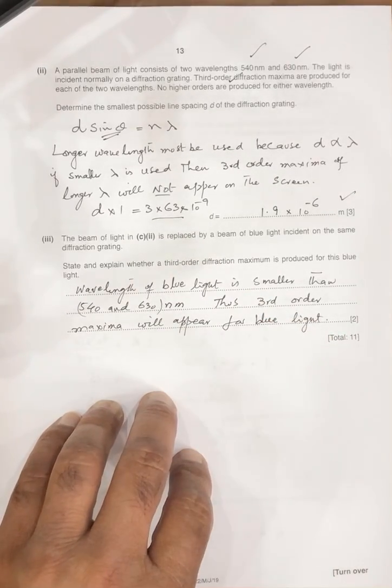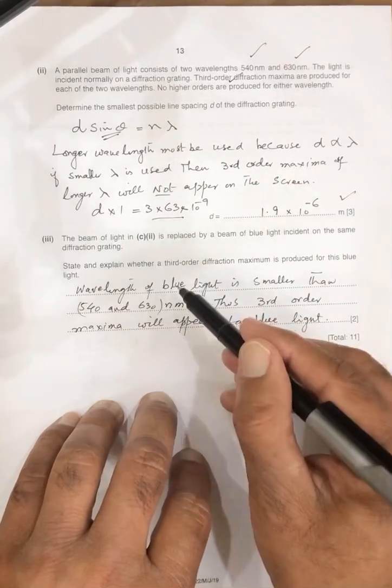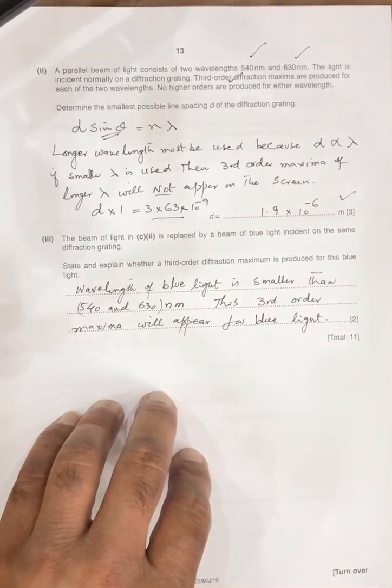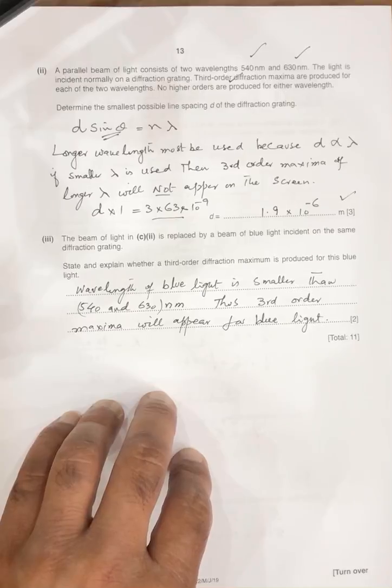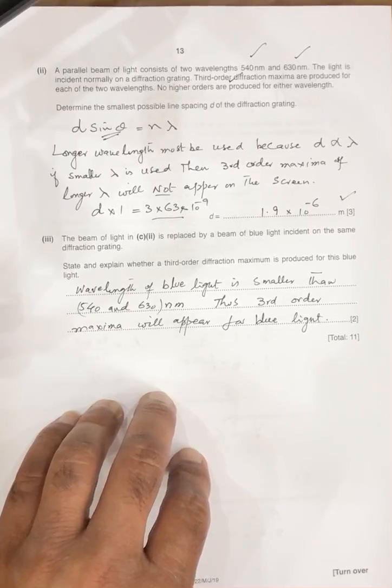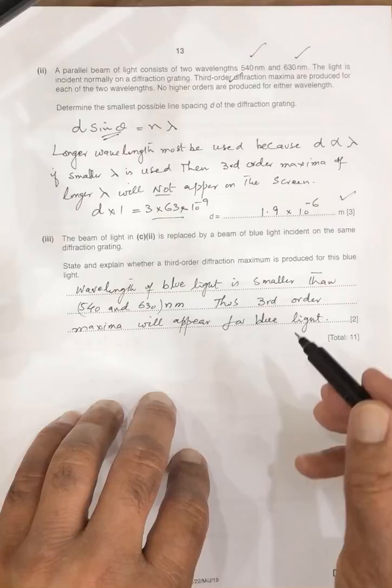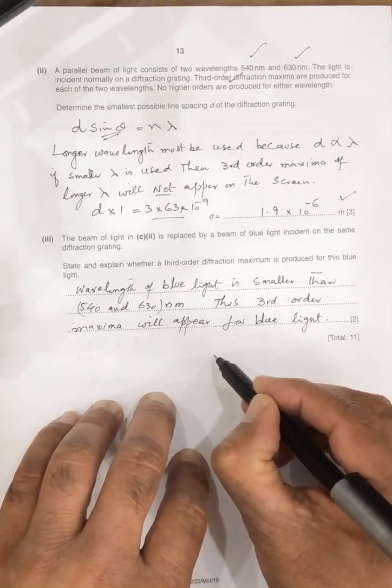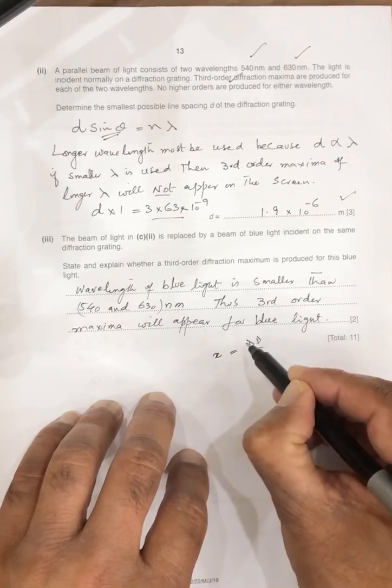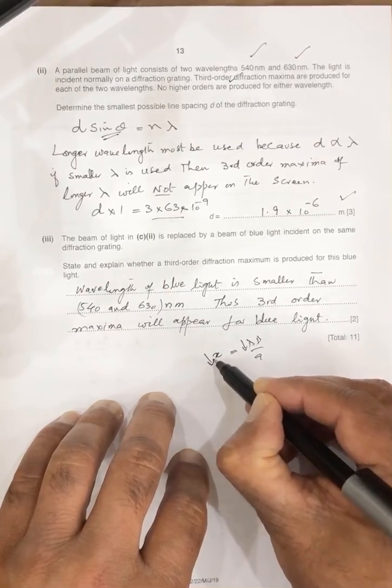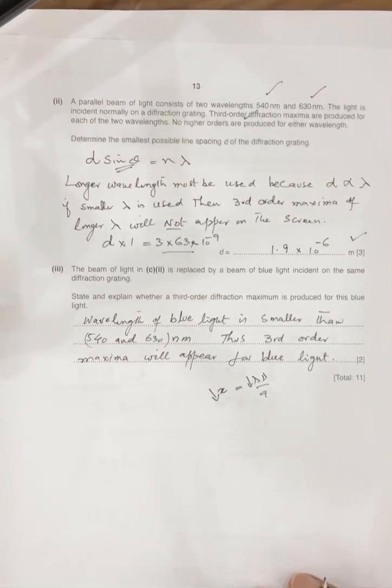Next, the beam is replaced with a blue light. Explain whether the third wavelength of the blue light is smaller than 540 and smaller than 630. That's the third outer maxima will appear on the screen. Because spacing is equal to lambda d over, wavelength is small, so spacing is small, so it will appear on the screen.